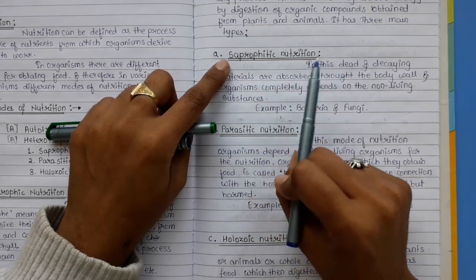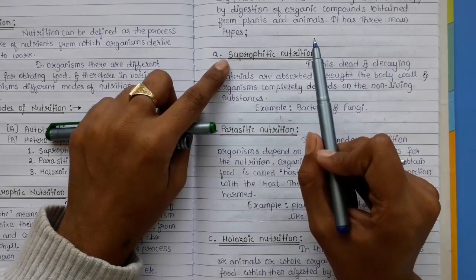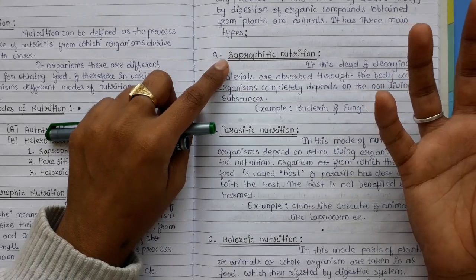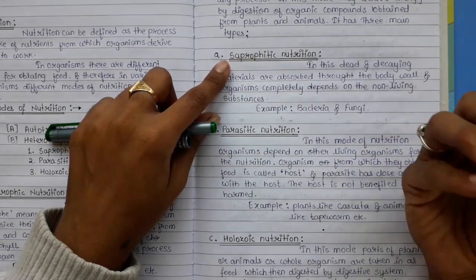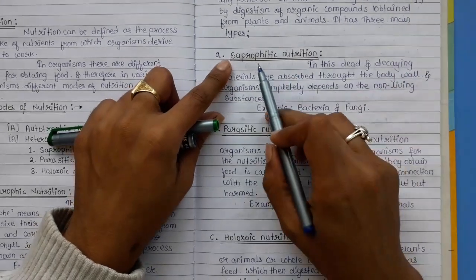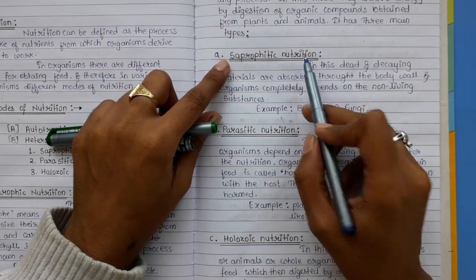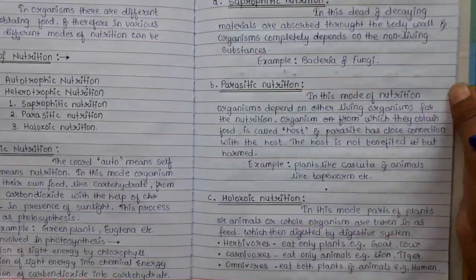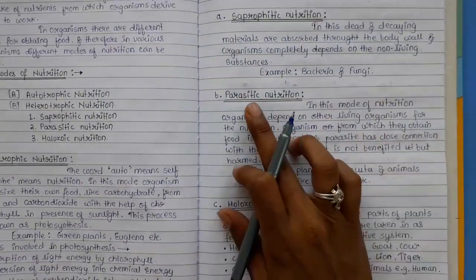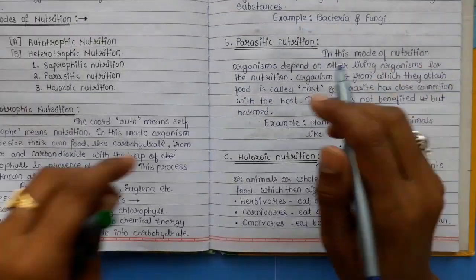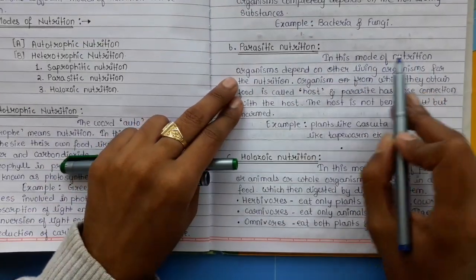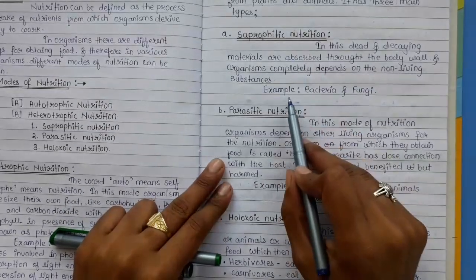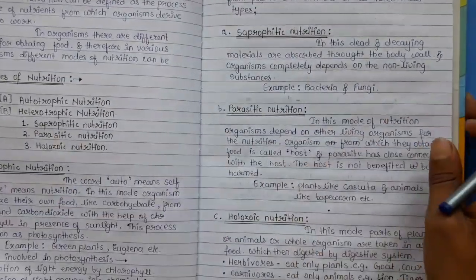In saprophytic nutrition, the organism doesn't kill anyone — it depends on dead and decaying substances. Decomposers, for example, come under saprophytic nutrition because they eat dead and decaying matter. Examples of saprophytic organisms are bacteria and fungi.